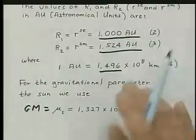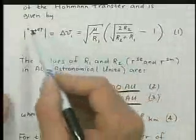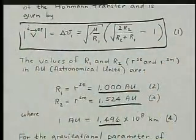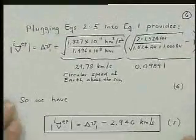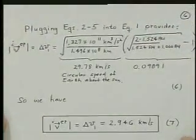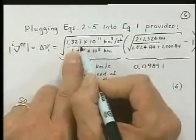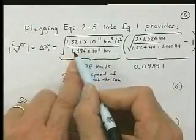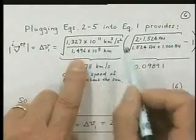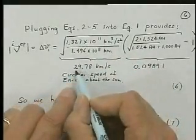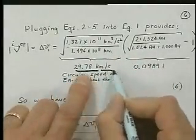So now plugging these numbers into equation 1, we get the following. Delta V1, here we have the mu of the Sun, and downstairs here we have the distance from the Earth to the Sun, it's 1 AU. The square root, by the way, is 29.77 kilometers per second.